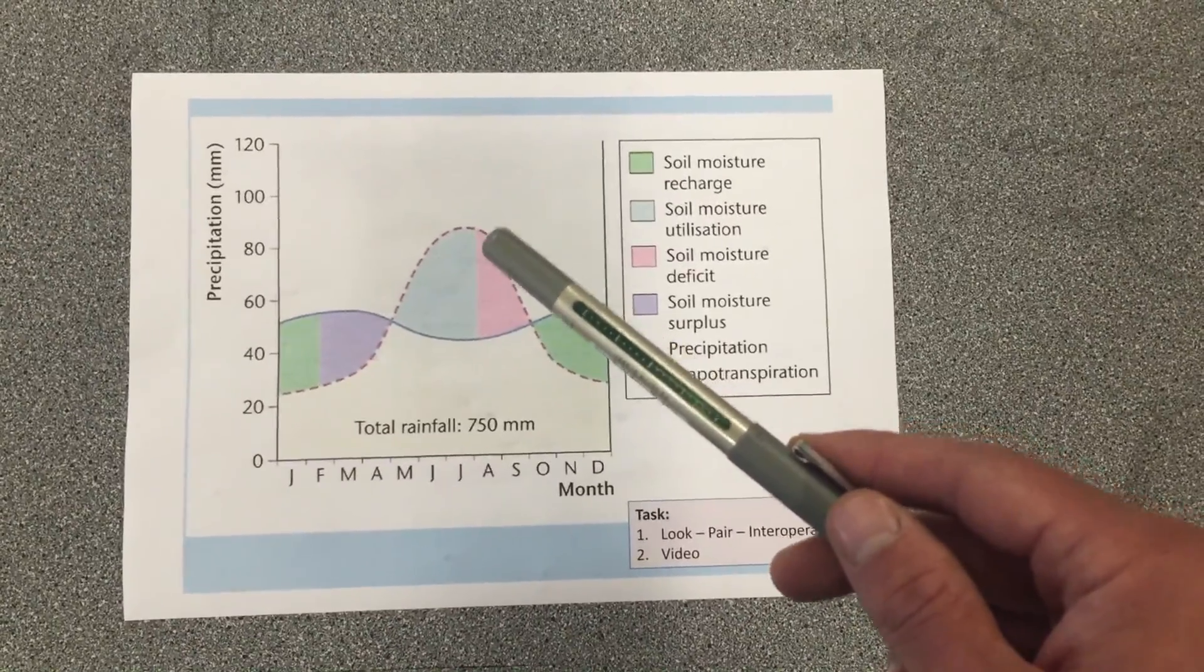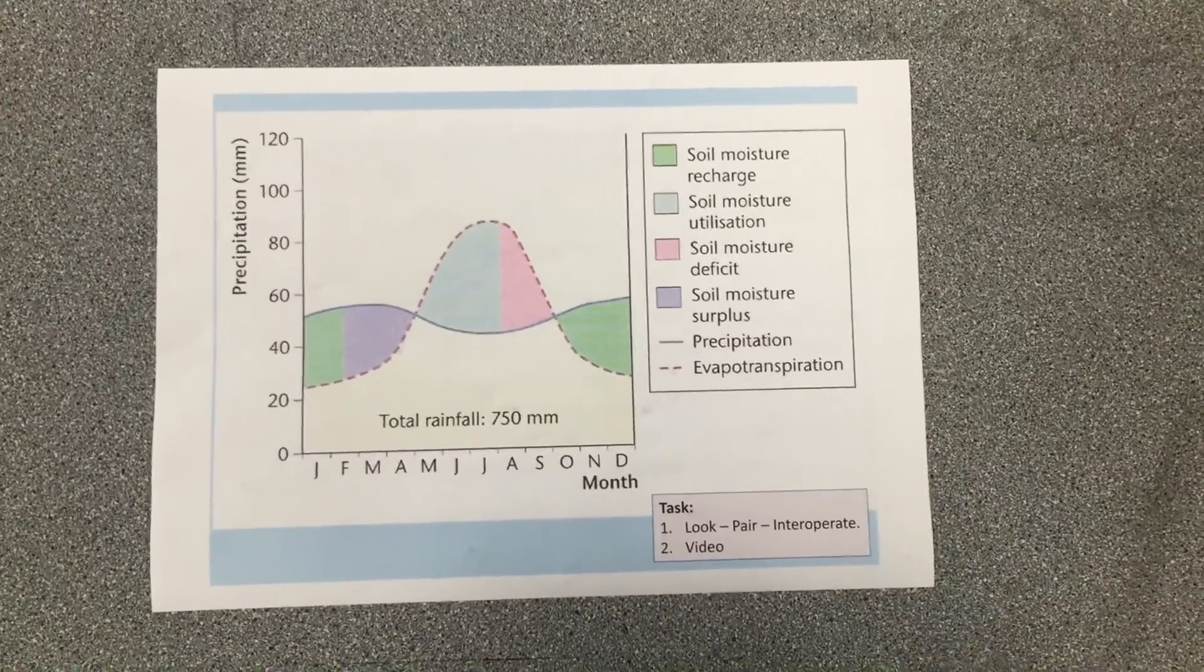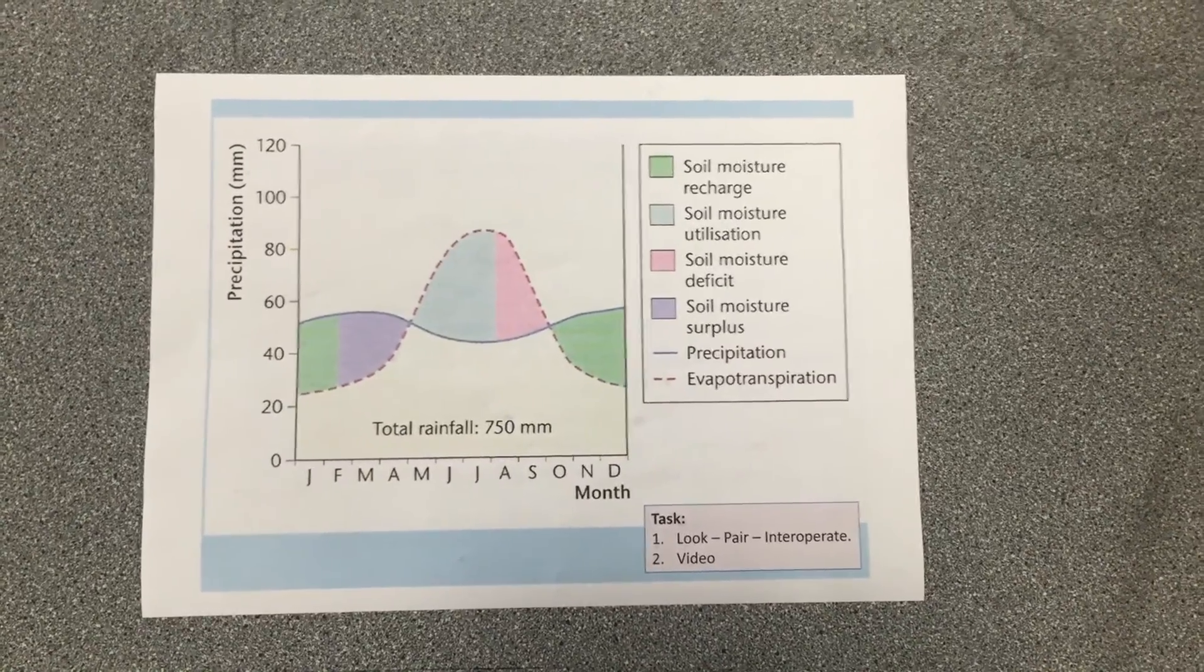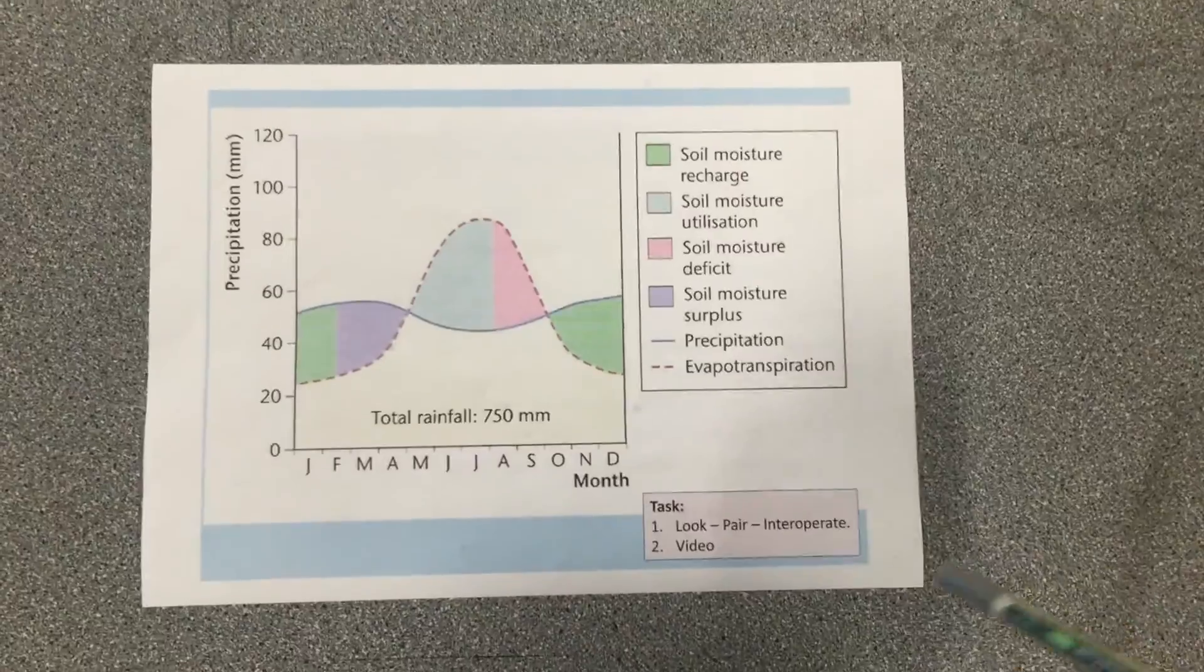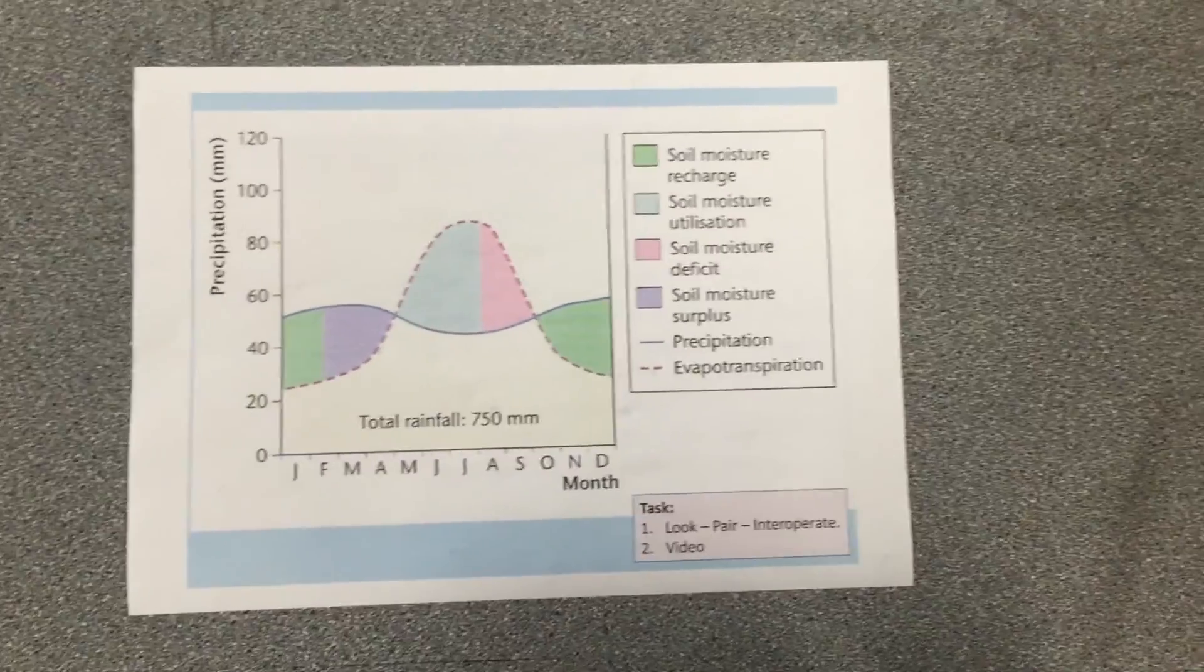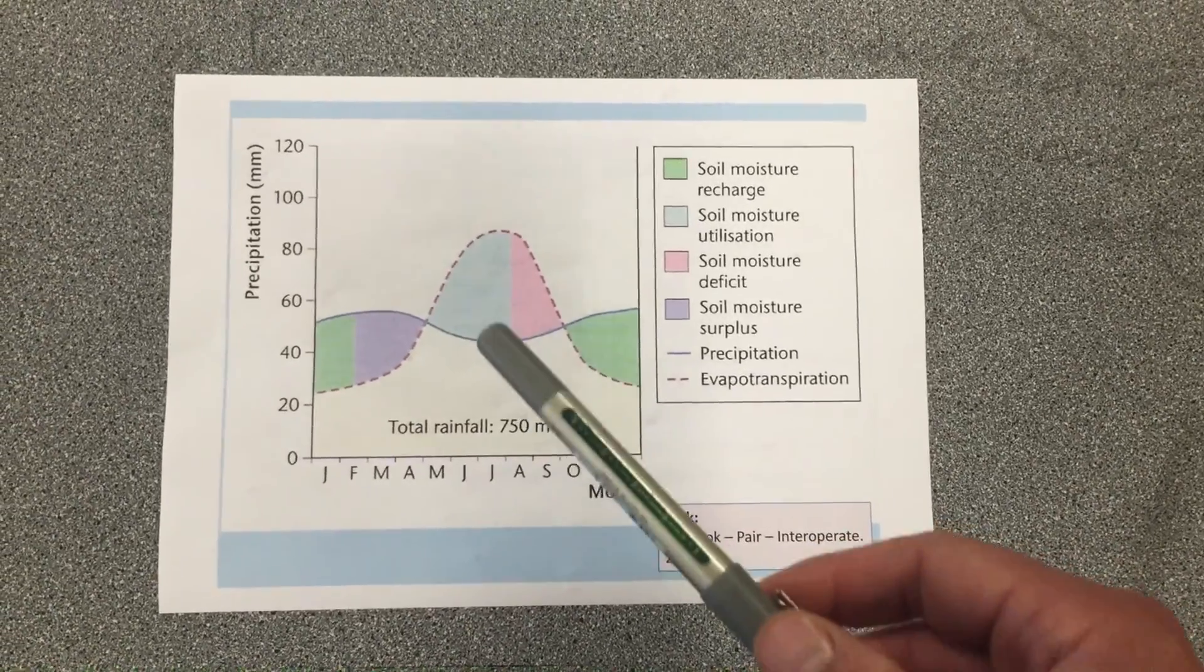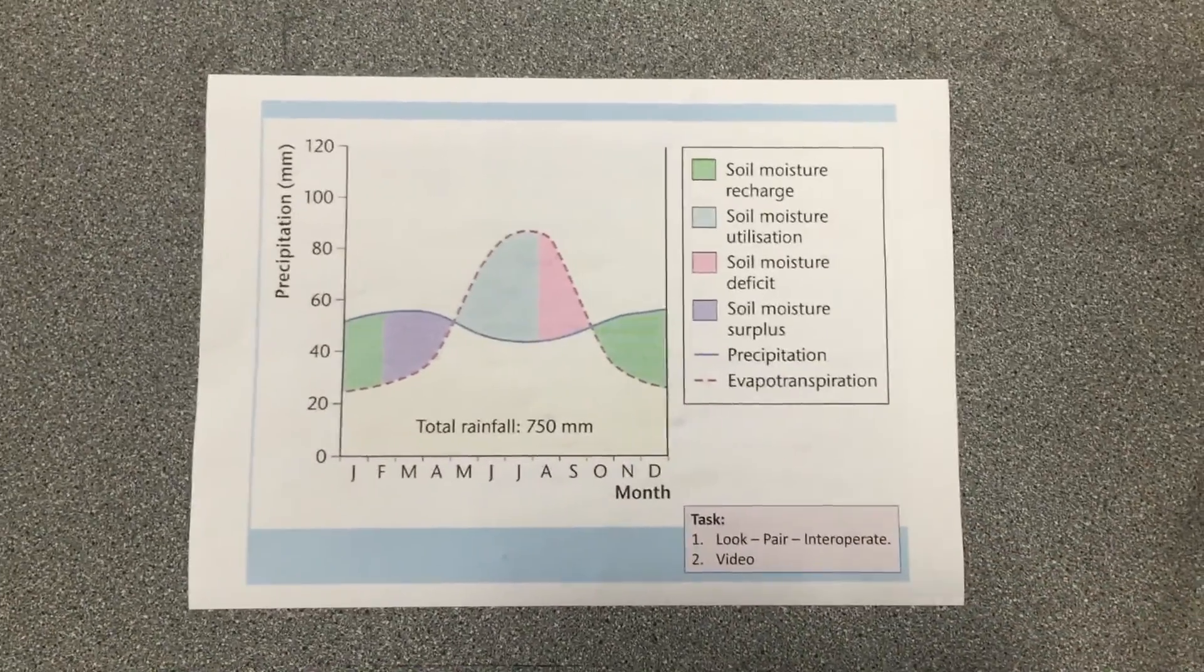However, we get to a point here where actually we run out of water in our soil, and we end up with what we call a soil moisture deficit. So when we run out of water in our soil, we're likely to get wilting because plants can't get enough moisture in order to be able to survive. That might be where we get hosepipe bans in the summer and you can't water your plants.